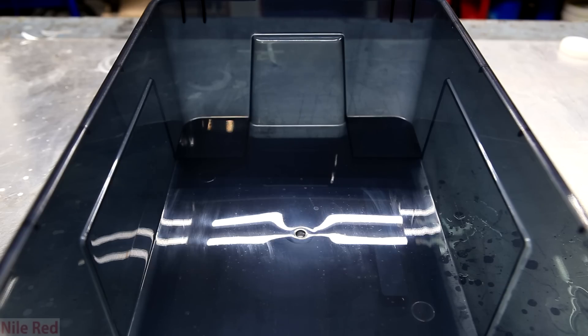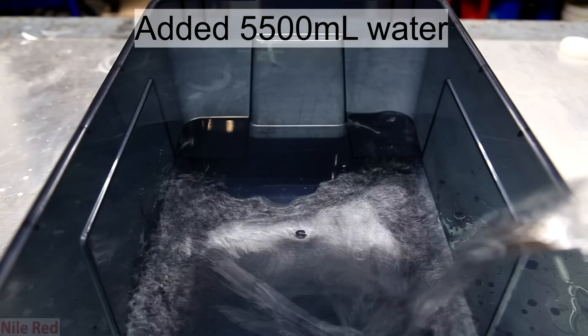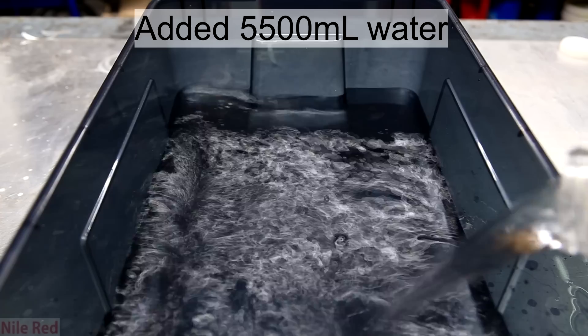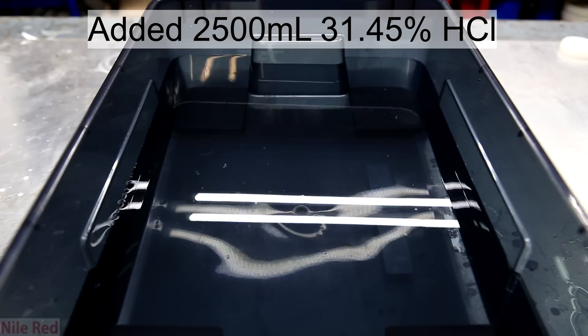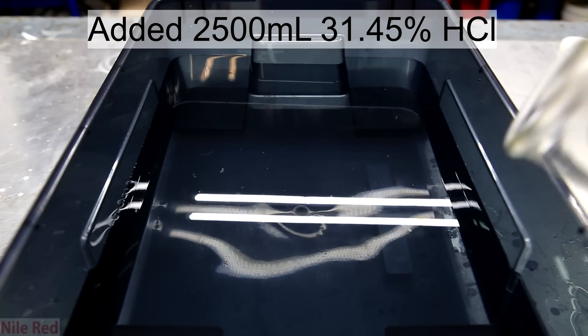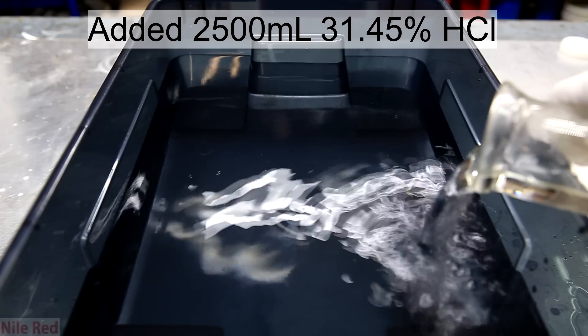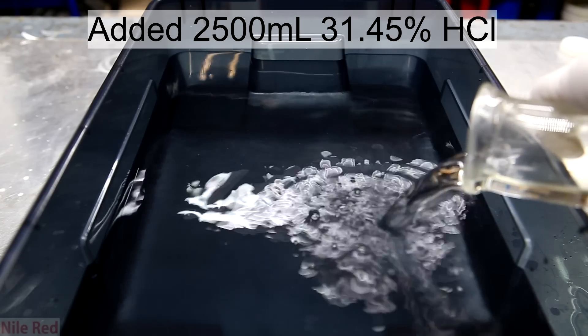First I'll show how to make the acid bath, which is pretty quick. To a suitable plastic container was added 5500 milliliters of distilled water. This was followed by the addition of 2500 milliliters of 31.45% hydrochloric acid.